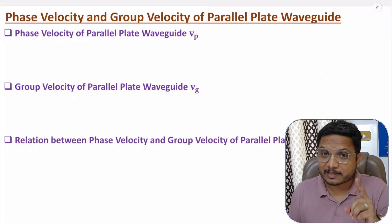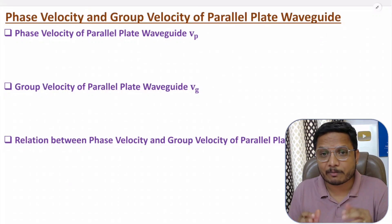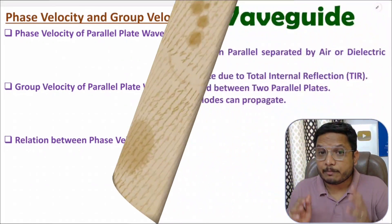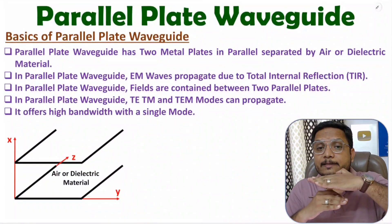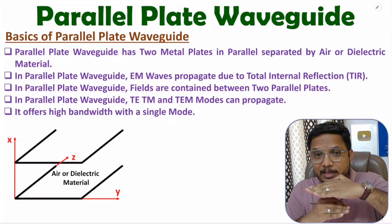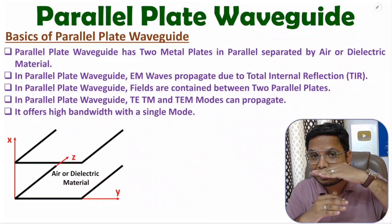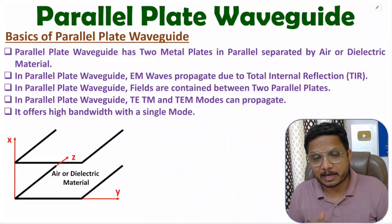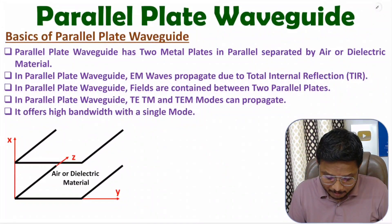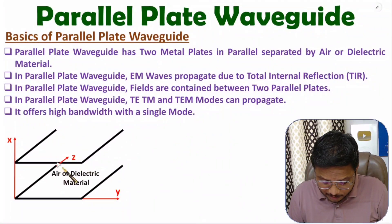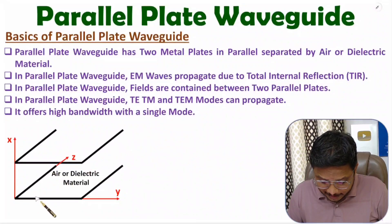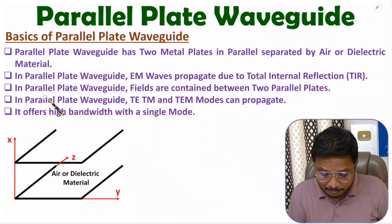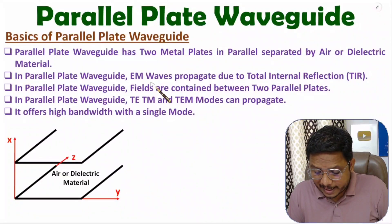Let us begin with the basics of parallel plate waveguide. In parallel plate waveguide, two metal plates are there in parallel to each other. In between the two metal plates, there will be air or dielectric material. You can observe here — by black color, metal plates are shown. These two plates are separated by air or dielectric material.